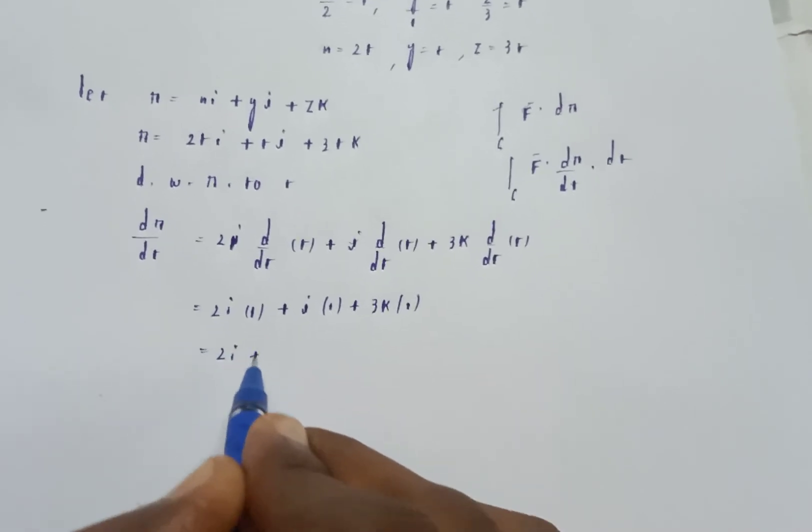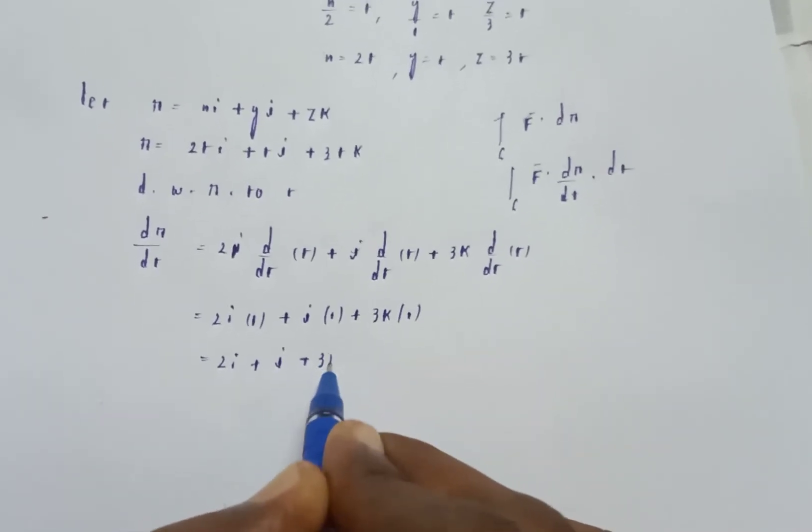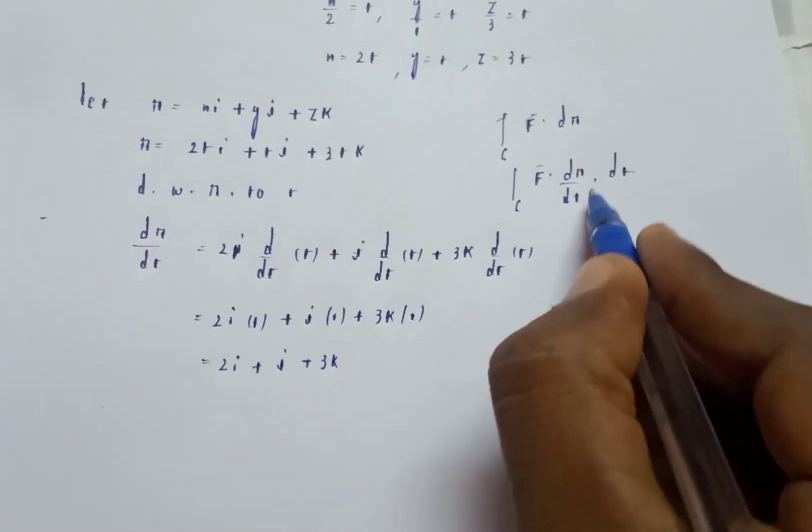plus 3k. Therefore dr by dt equals 2i plus j plus 3k.